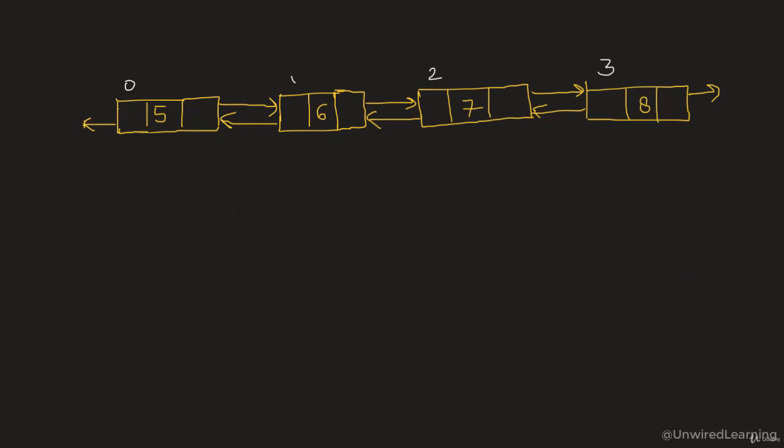So the first case is when input is invalid — we can return either minus 1 or anything else. The second thing is when we need to remove our head.